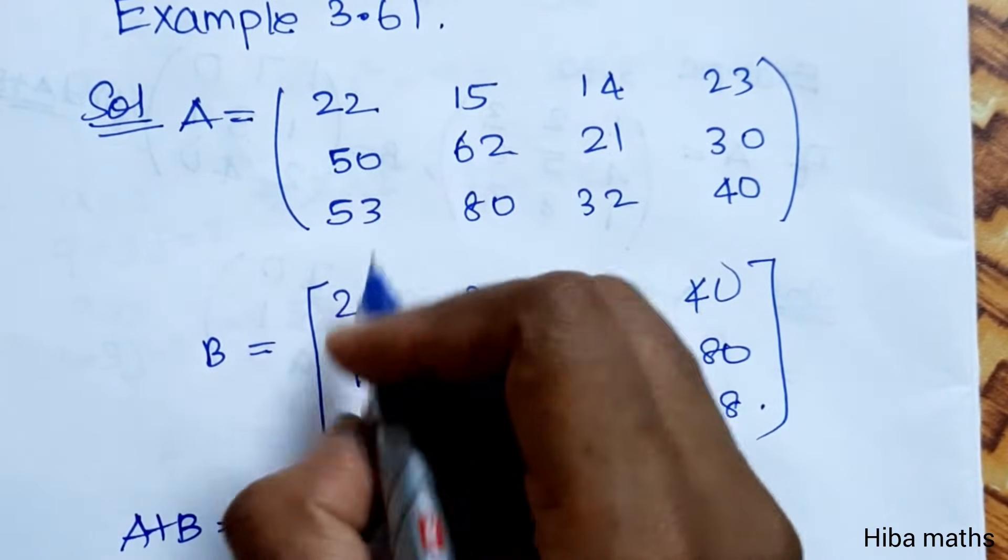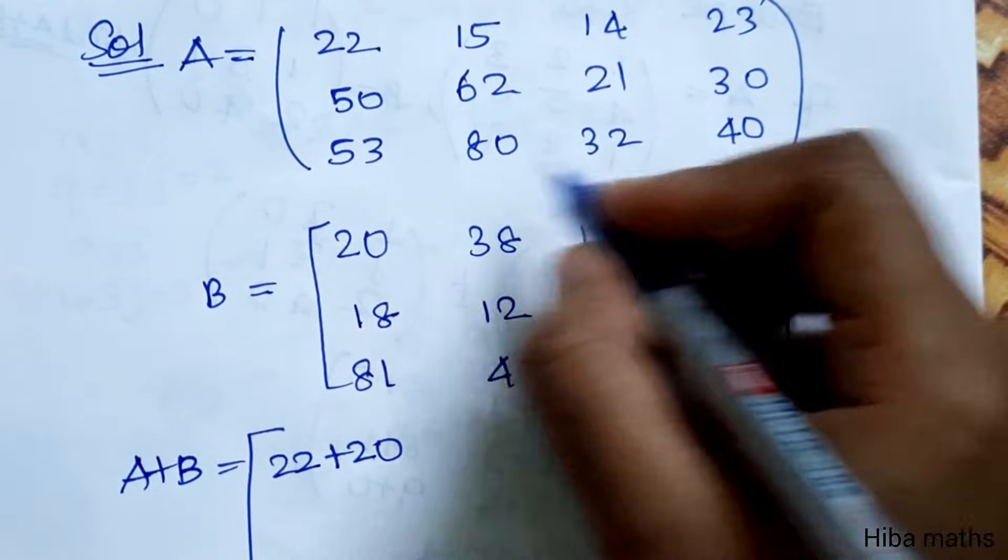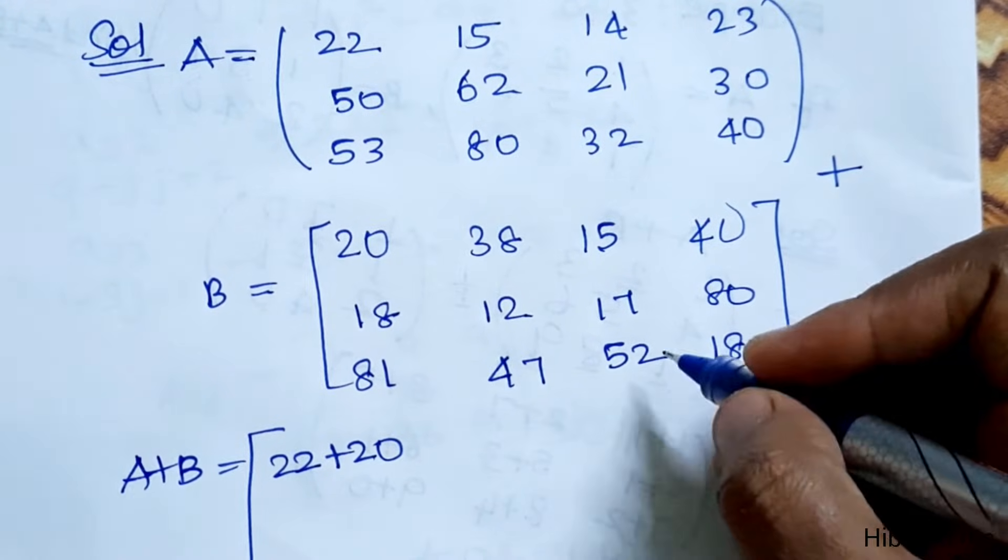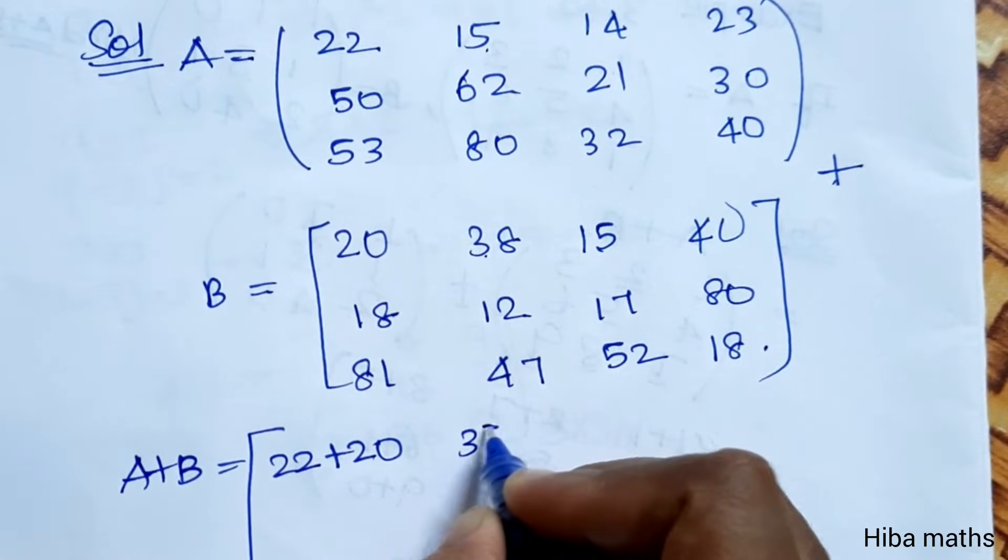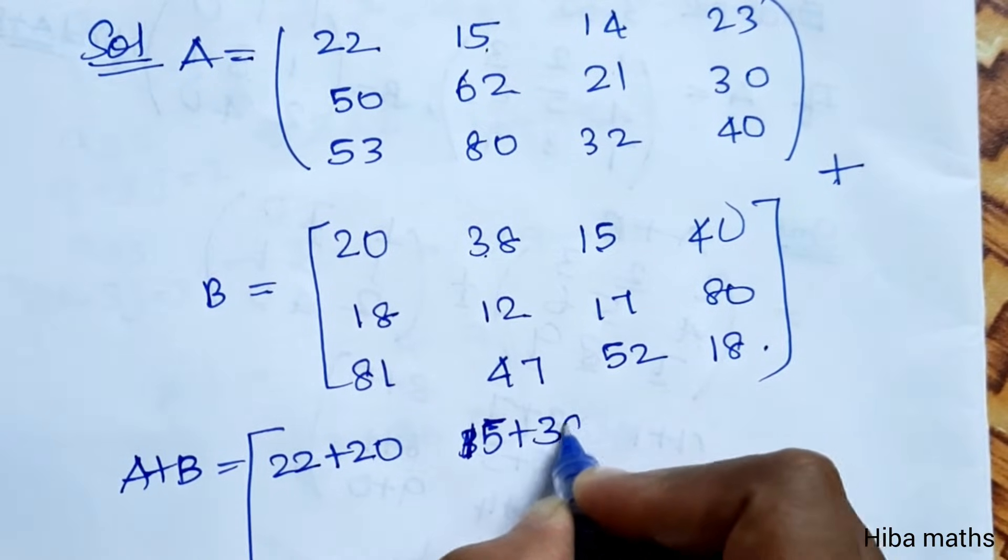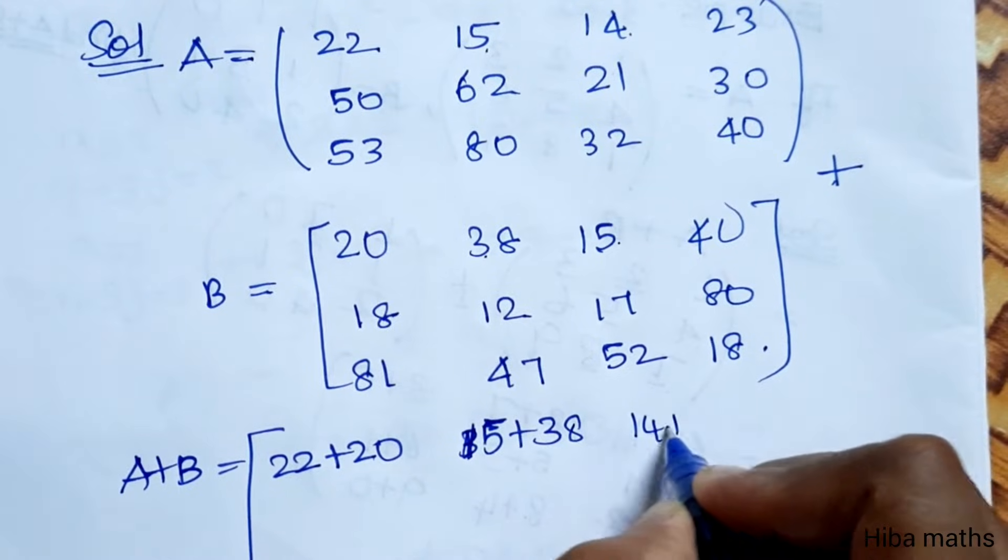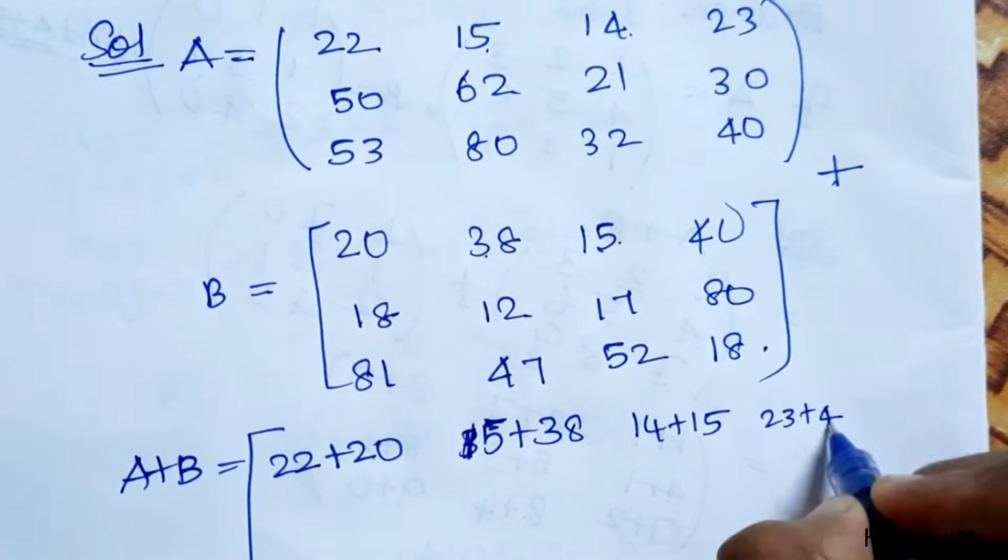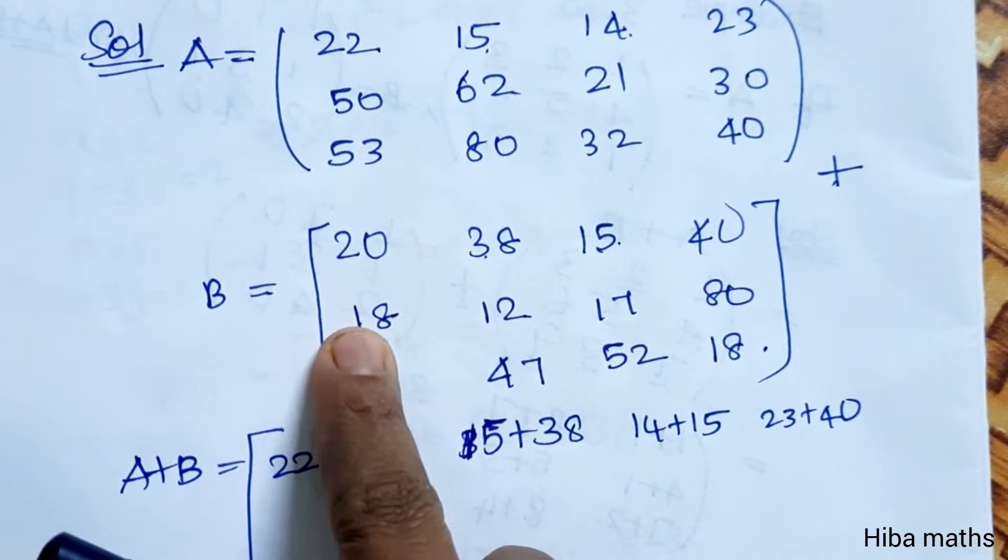We will use A plus B matrix. 22 plus 20, 15 plus 38, 14 plus 15, 23 plus 40. What numbers do you have to add in this second matrix?